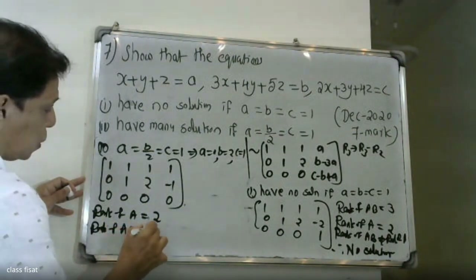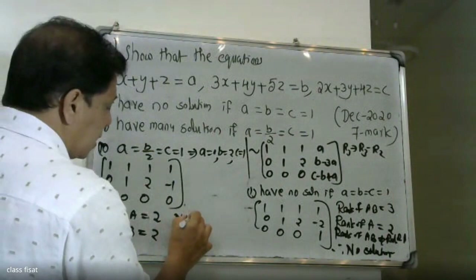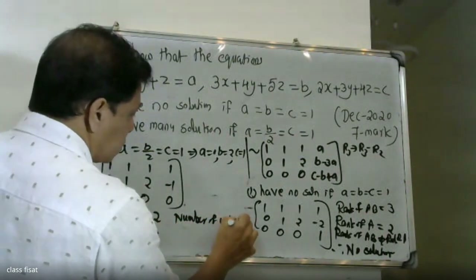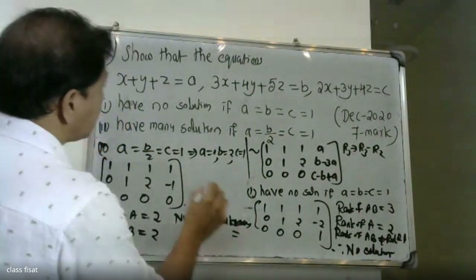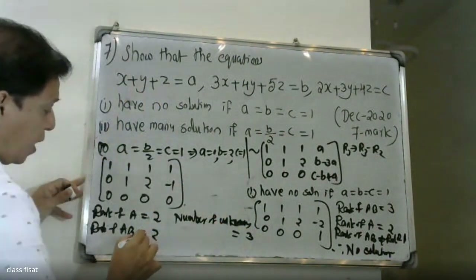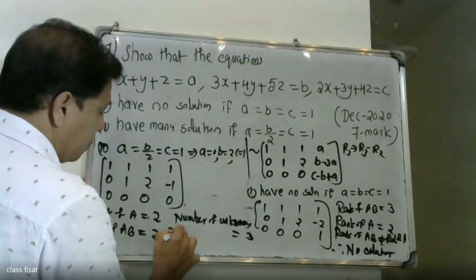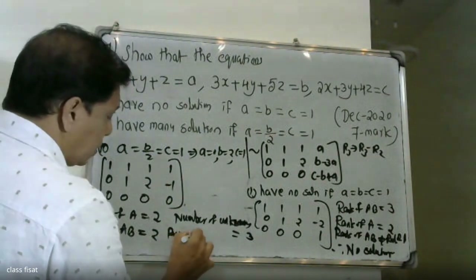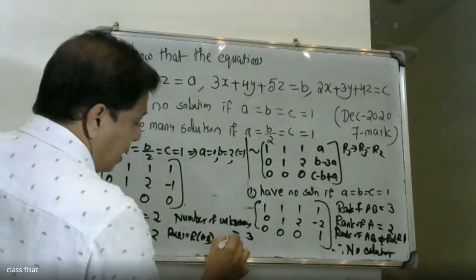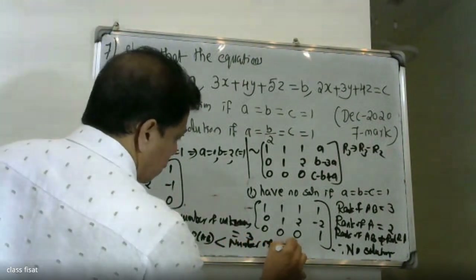Rank of AB equals 2. Number of unknowns is 3 — the variables x, y, z. Since rank of A equals rank of AB, which is less than the number of unknowns, the system has infinite solutions.